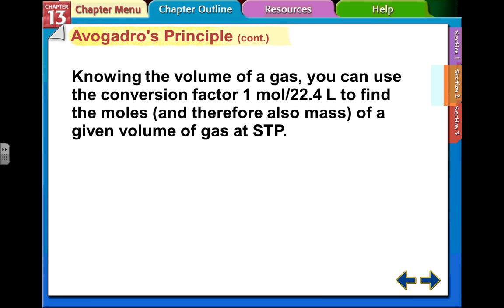If you know the volume of a gas, you can use the conversion factor - one mole over 22.4 L - to find the moles. And then once you find the moles, you can also find the mass of a given volume of gas at STP.